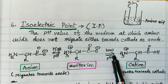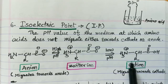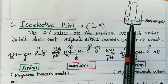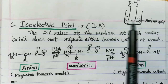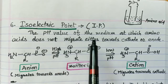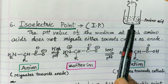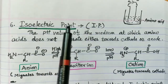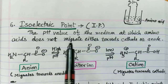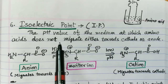If the pH is very low, the medium becomes acidic, and the negatively charged anion is converted into a COOH group giving a cationic form — the cation migrates towards the cathode. There is a certain pH value at which the amino acid does not migrate towards either cathode or anode. That pH value is the isoelectric point: the pH value of the medium at which amino acids do not migrate either towards cathode or anode.